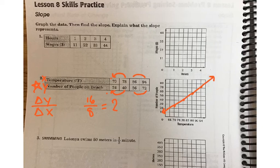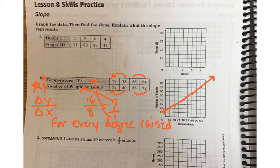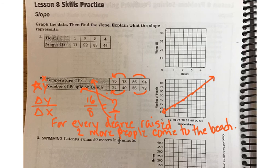And then we need to say what the slope represents. So this means that for every... So what this means, I'm actually going to write this as 2 over 1. Remember that 2 represents the Y value and Y is number of people on the beach. And 1 represents X, which is the temperature. So what this means is for every degree raised, for every 1 degree, 2 more people come to the beach. And we could have written that differently, like 2 more people come to the beach for every degree it is raised, or something like that.